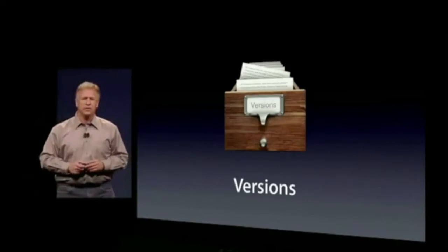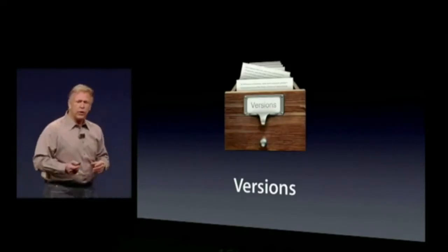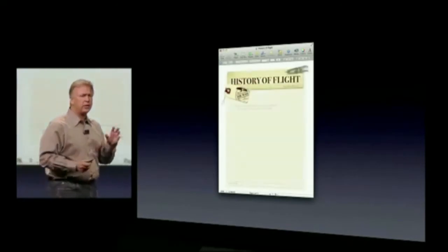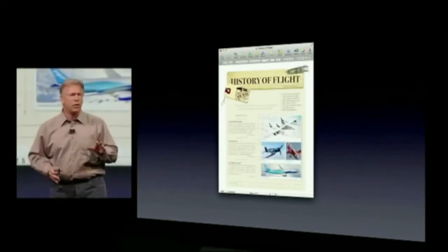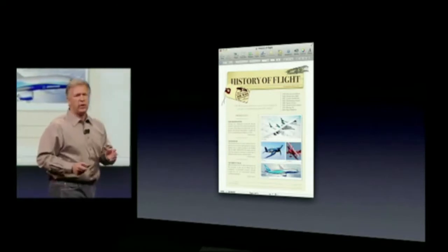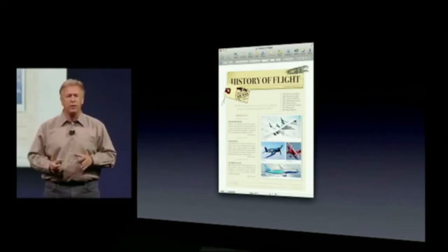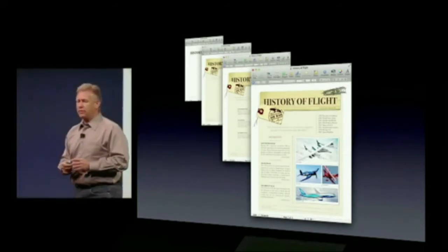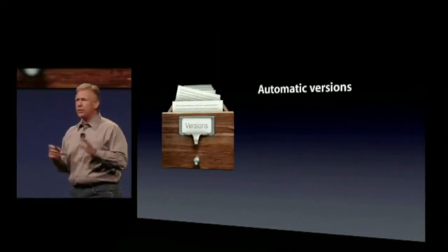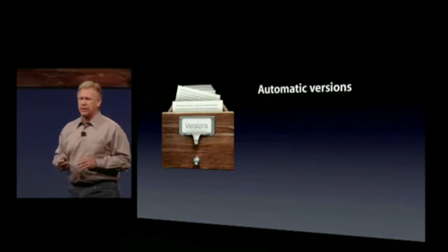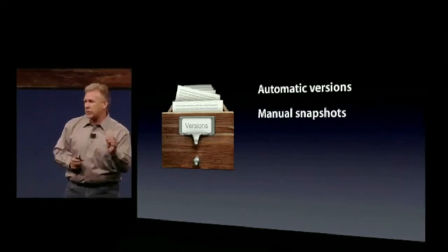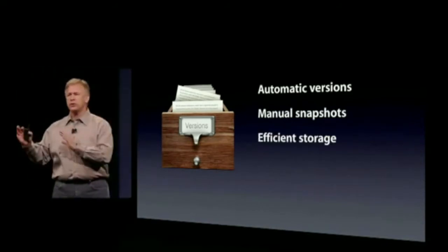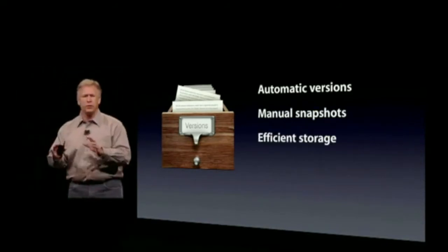Auto Save gave us a great idea to go even further with the next feature: Versions. You're working on a document — entering text, formatting, adding copy, adding graphics — and all along Auto Save is saving your document. In fact it's saving all these versions of your document as you work. It's automatic, you don't have to do anything. If you love something at a particular moment you can of course take a manual snapshot. And it's very efficient — we only store the difference between versions, not whole new documents.